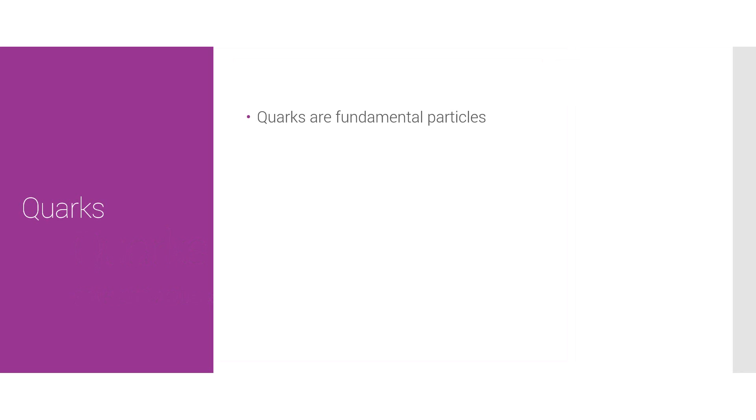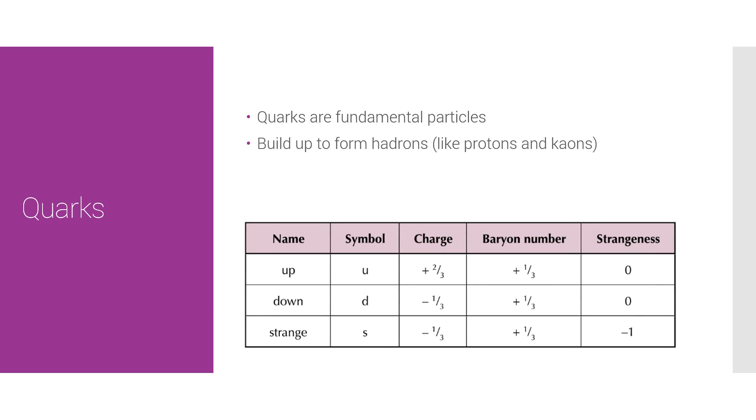Quarks are fundamental particles and are the building blocks for hadrons, and consequently, antibaryons and anti-mesons are made from antiquarks. The three we need to know about are the up, down and strange quarks, and of course their respective antiquarks. We're also given the quantum numbers for all of these in the datasheet in the exam.